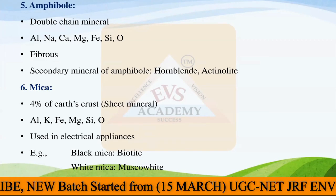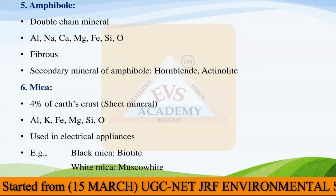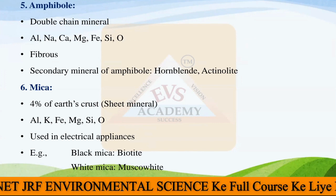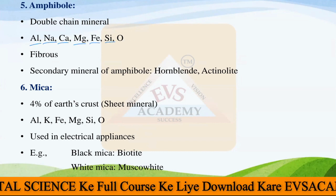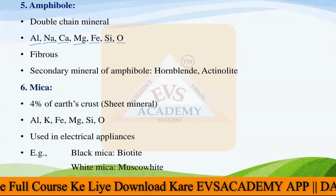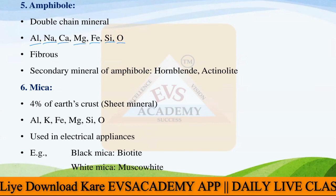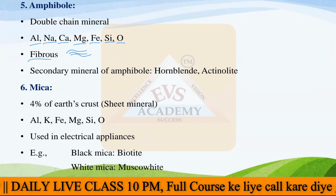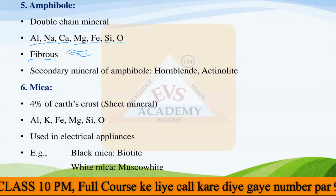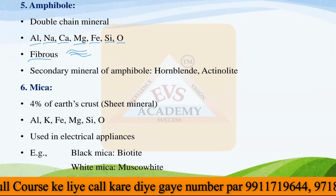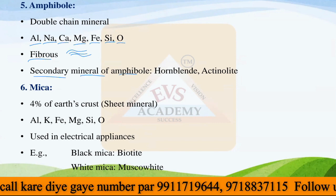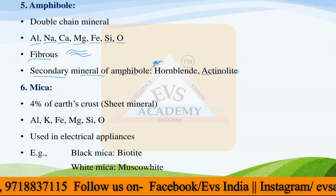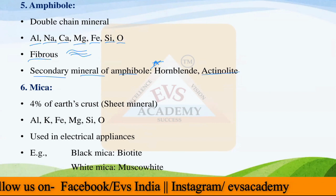The next mineral is amphibole, a double-chain mineral made up of aluminium, sodium, calcium, magnesium, iron, silicon, and oxide. It is fibrous in nature, so fibers are present in this mineral. The secondary minerals formed from amphibole are hornblende and actinolite — both are secondary-type minerals formed from amphibole.